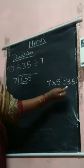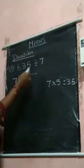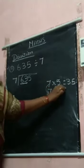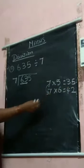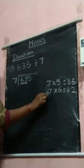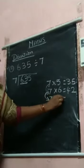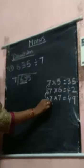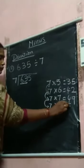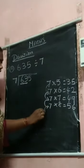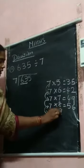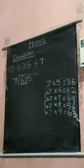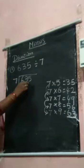7 5's are 35. 35 is smaller than 63, so go down. 7 6's are 42. 42 is also smaller than 63, so go down. 7 7's are 49, this is also small, go down. 7 8's are 56, this is also small, go down. 7 9's are 63. 63 is the match.